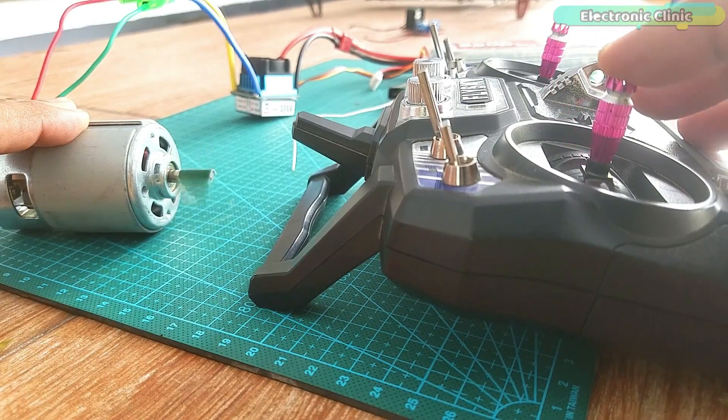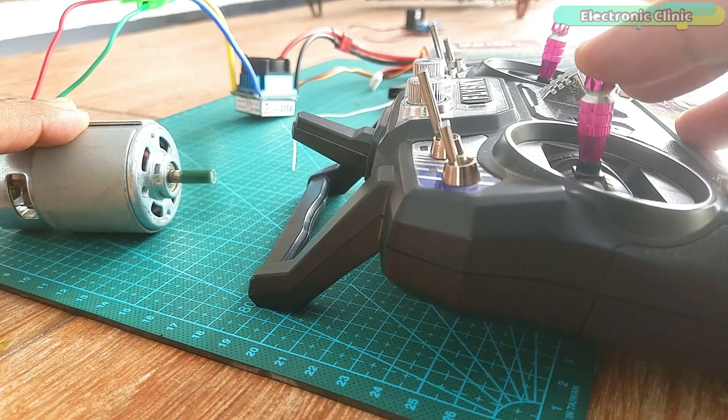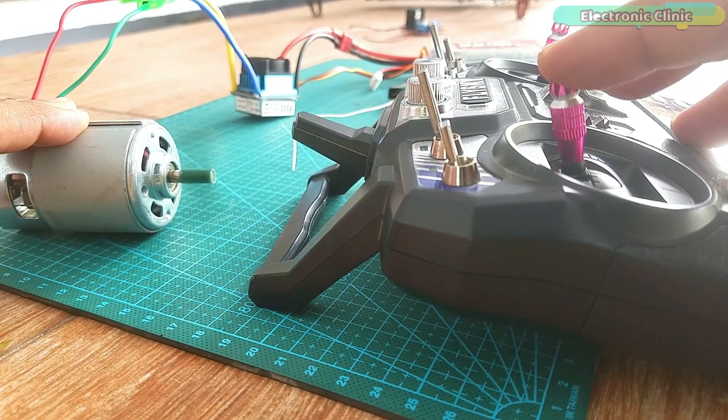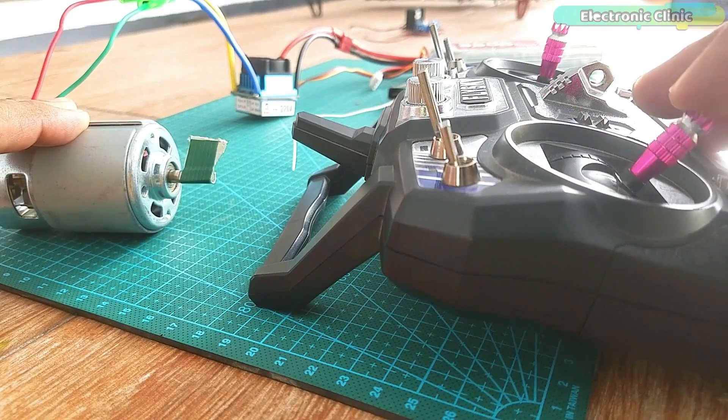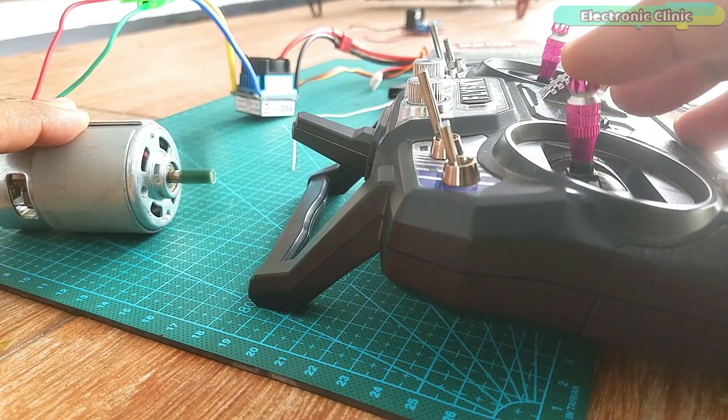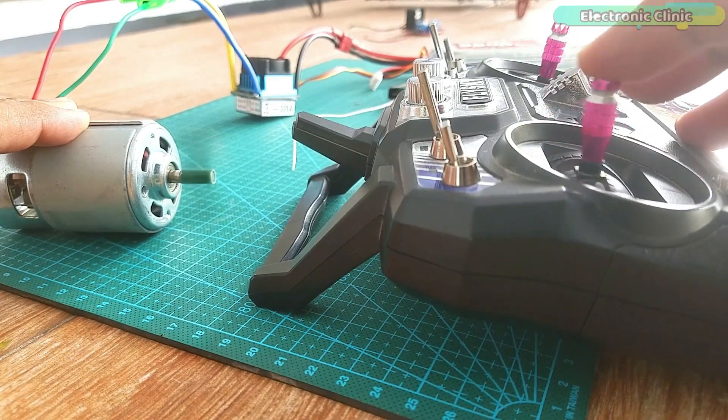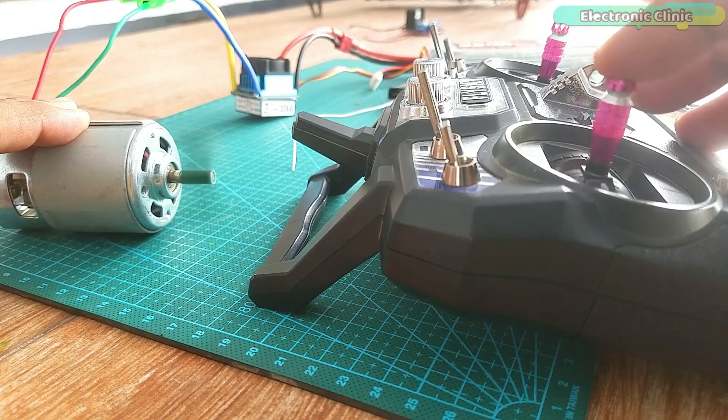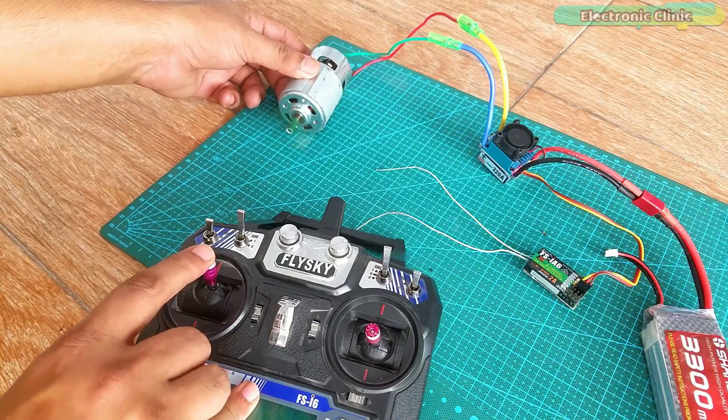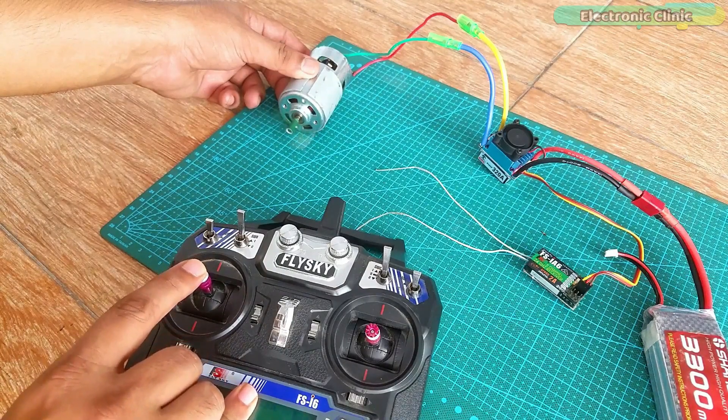You can use the upper part of the throttle stick for the forward movement and speed control and the lower part of the throttle stick is used to apply the brake and control the speed of the DC motor in the reverse direction. You cannot quickly change the direction of rotation of the DC motor.